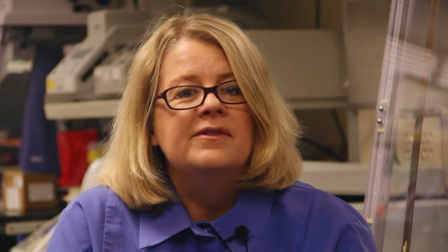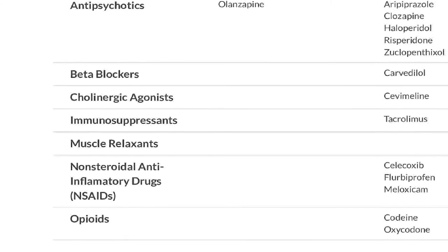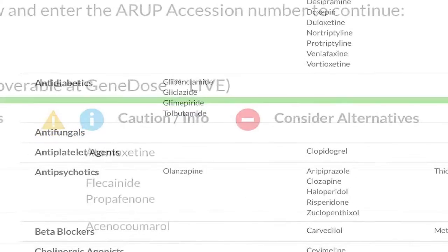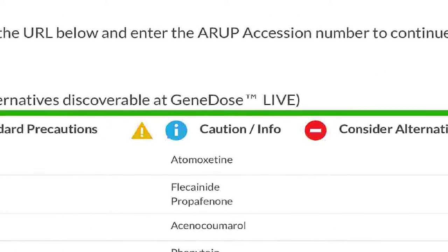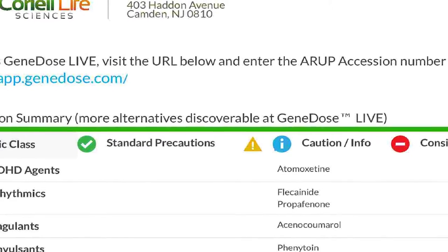The second part is a summary of several drug classes. More than 15 drug classes are represented, and they are organized in columns based on whether the drug can be taken with standard precautions versus whether a person should exhibit caution or potentially avoid certain drugs.